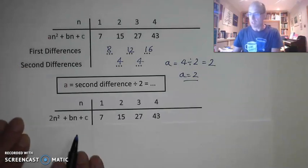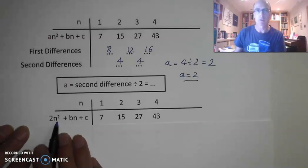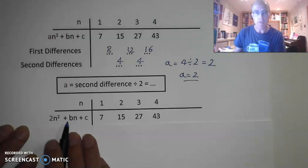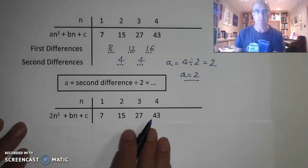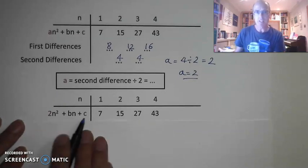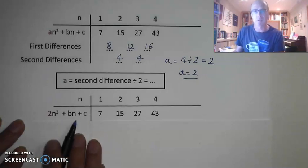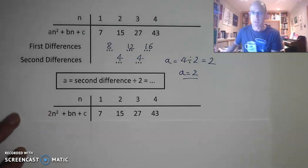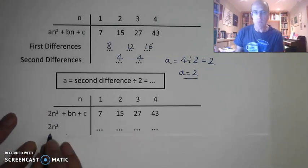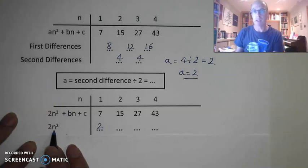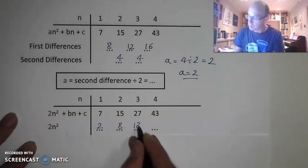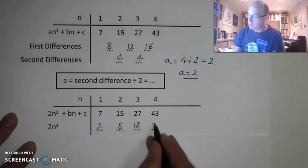So far I know my nth term expression starts with 2n squared plus bn plus c. I don't yet know b or c, but I do know 2n squared. I need to be careful with order of operations — square first, then double. When n equals 1: square to get 1, double to get 2. n equals 2: square to get 4, double to get 8. n equals 3: square to get 9, double to get 18. n equals 4: 4 squared is 16, doubled is 32.